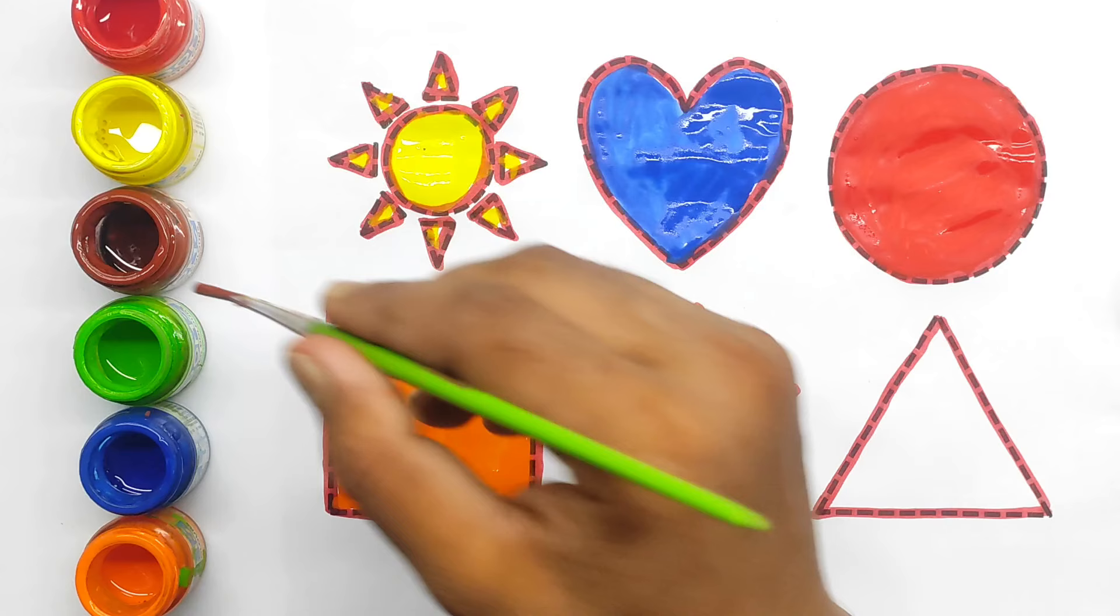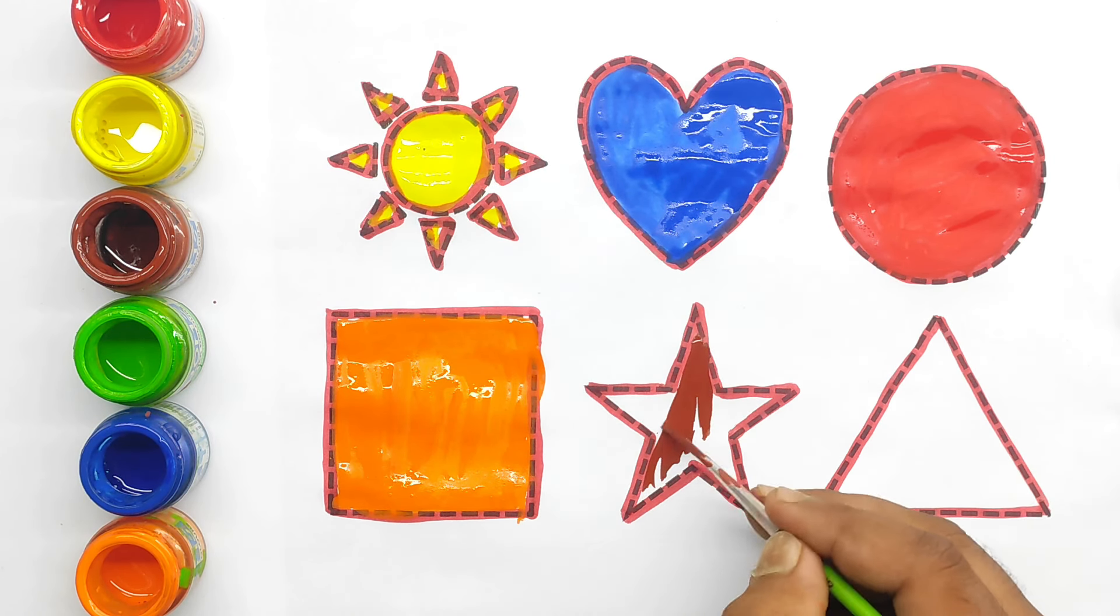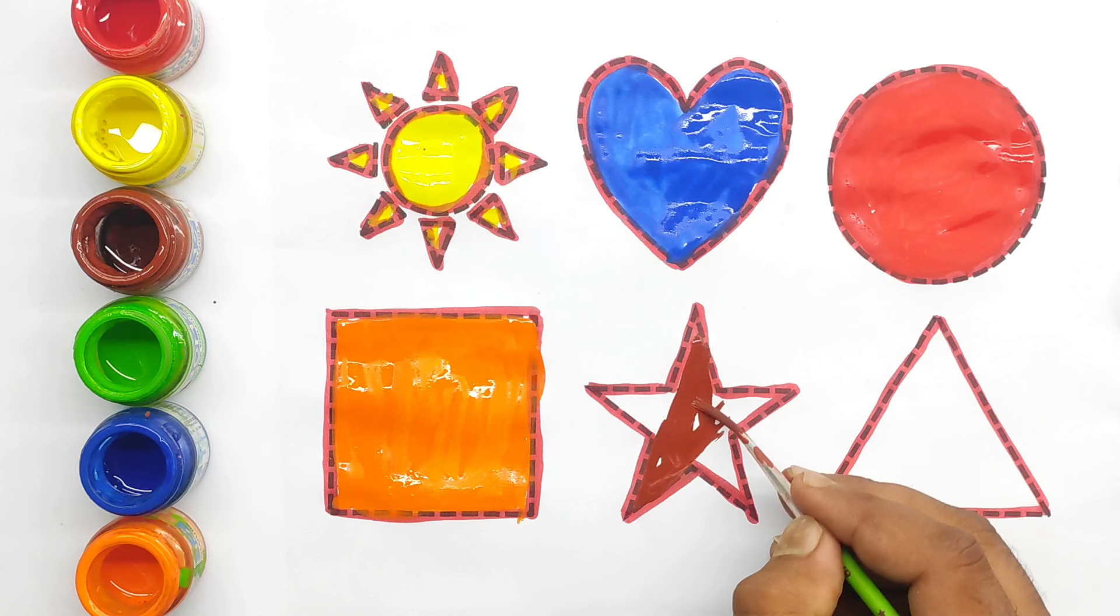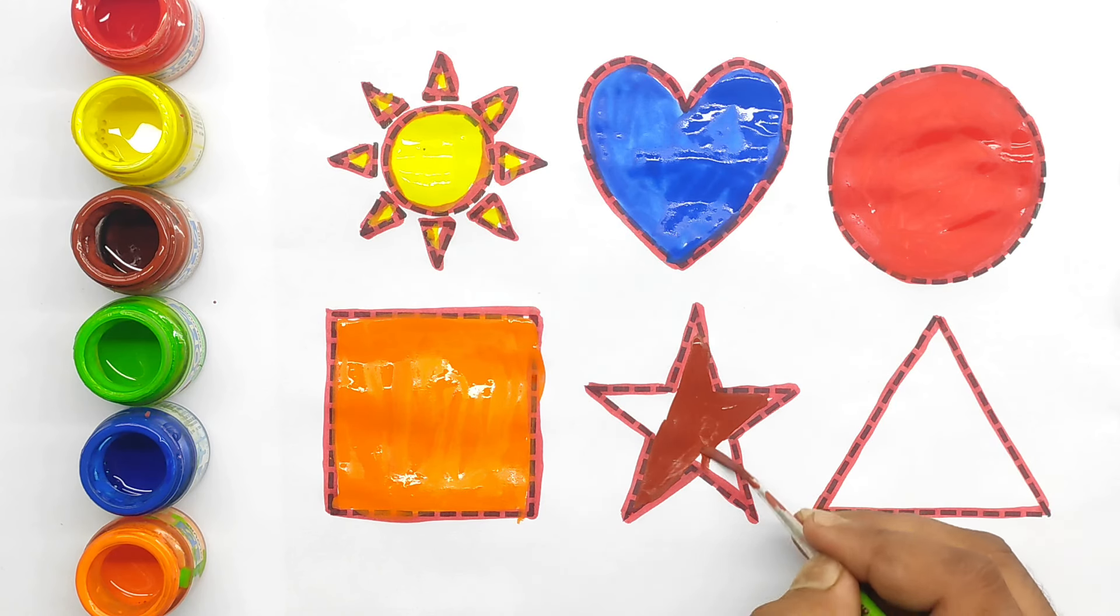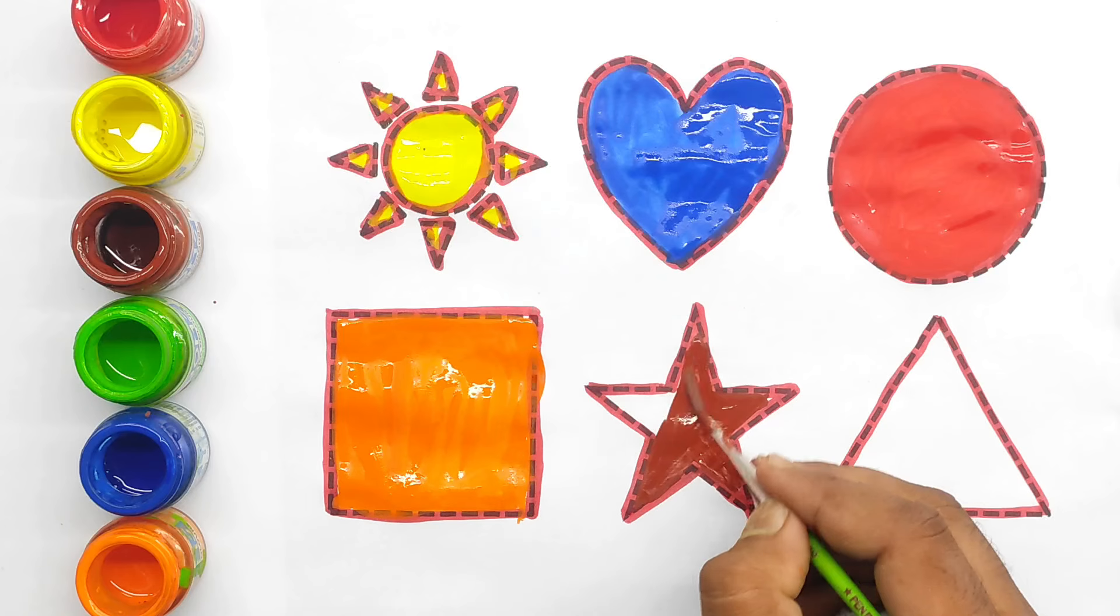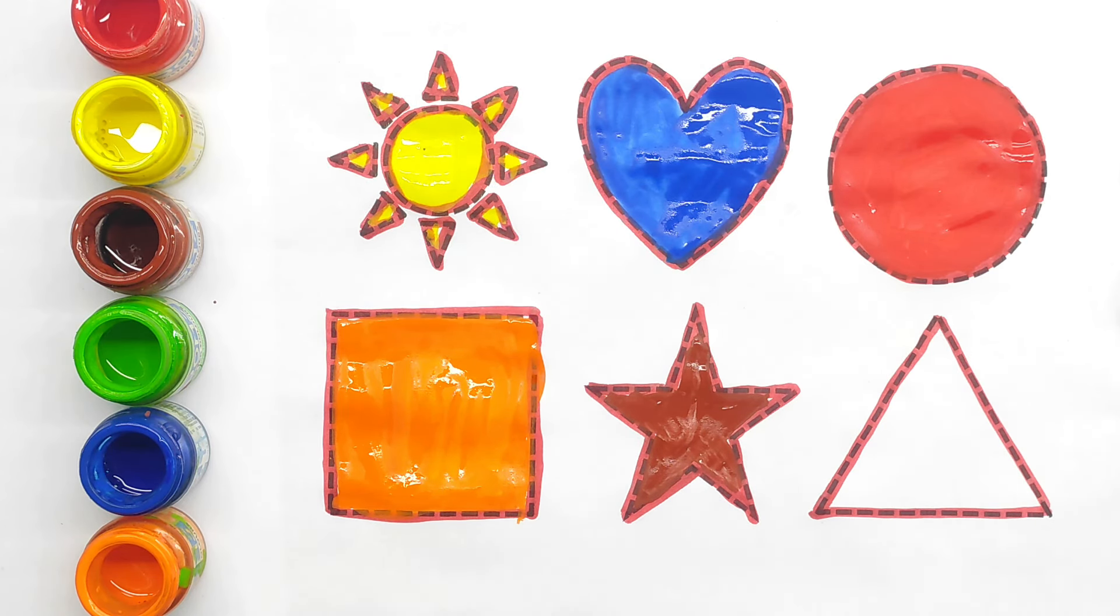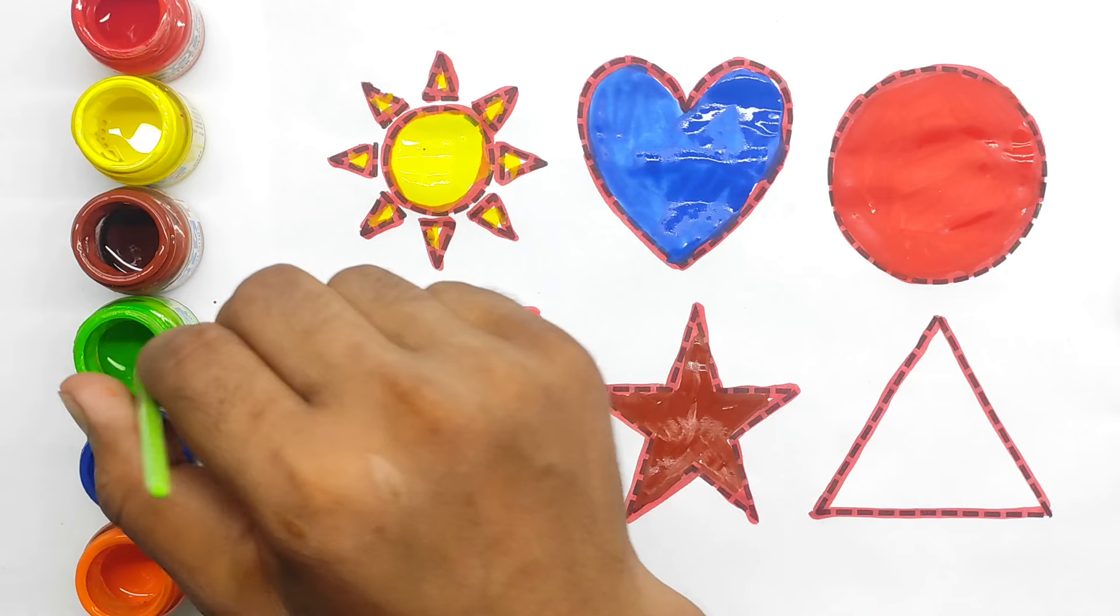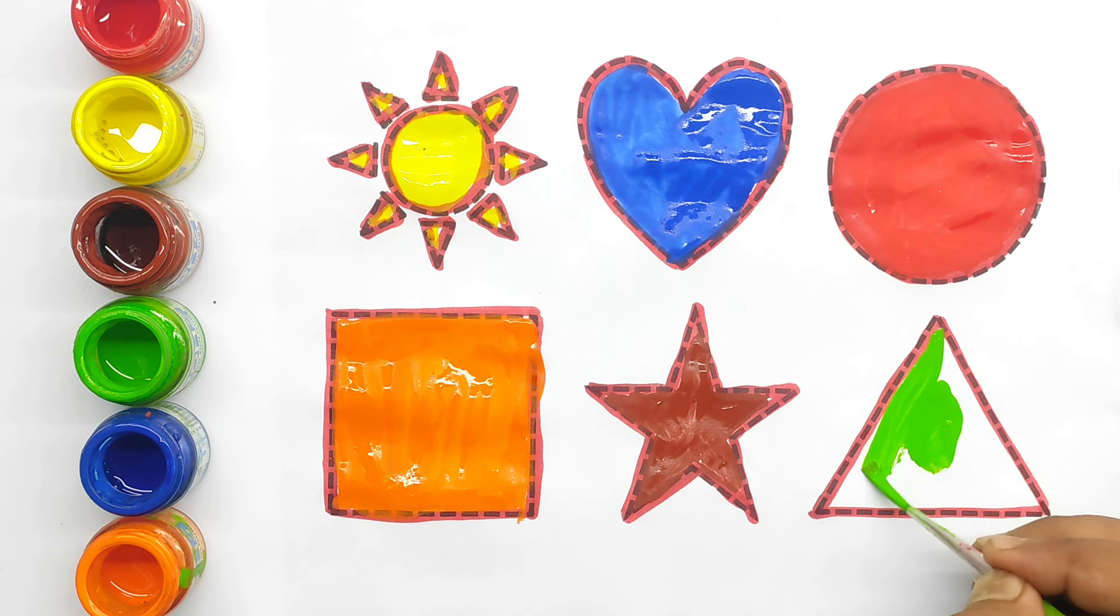Brown color star. Star. Light green color triangle.